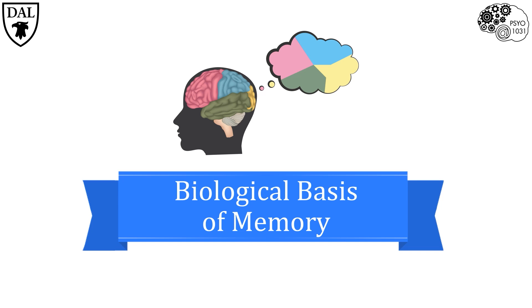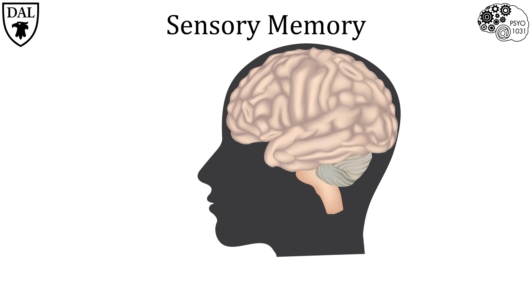The cerebral cortex is believed to be where the majority of sensory information is processed — that is, what you are seeing, hearing, where you are, and what all that information means. As sensory information ascends to your brain, it is first sent to the thalamus, from where signals from different sensory modalities are sent to different areas of the cerebral cortex.